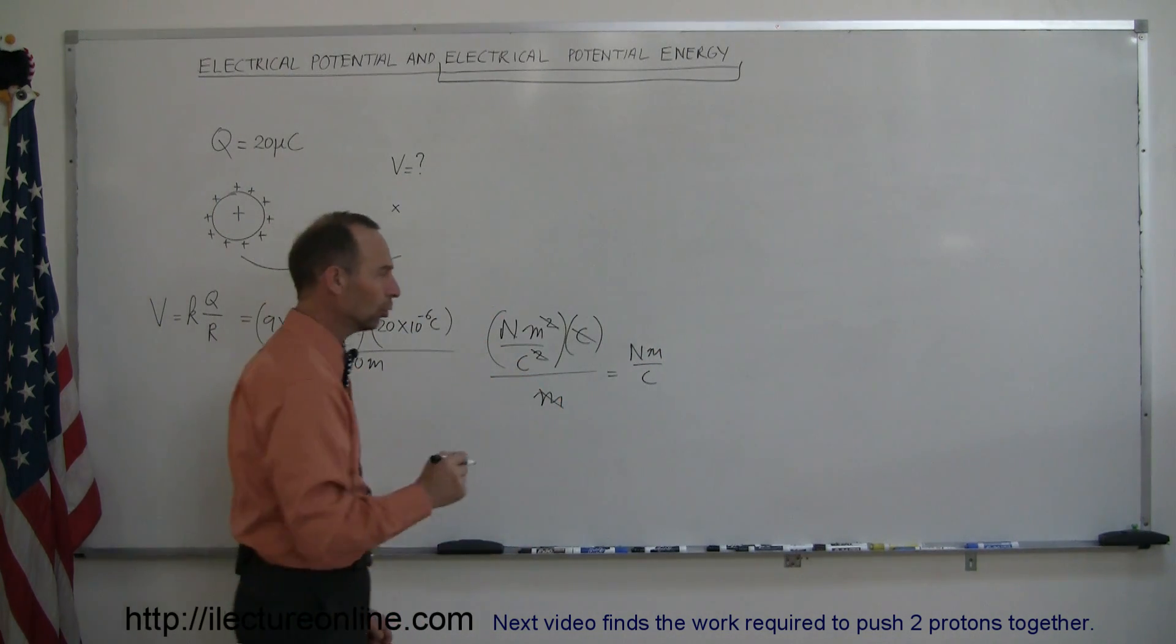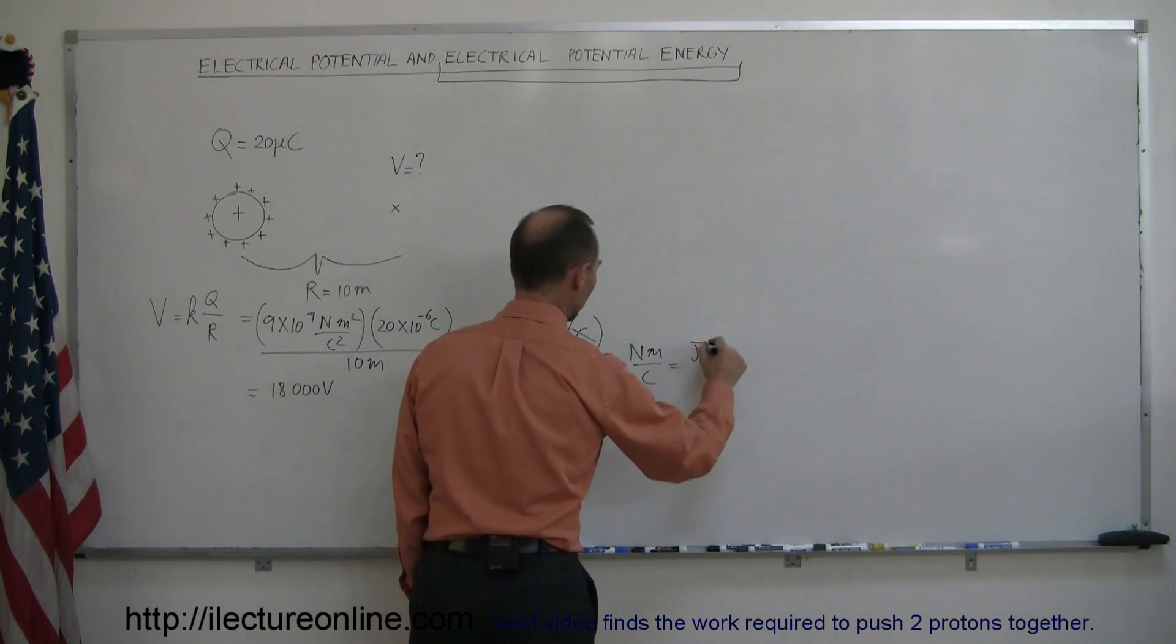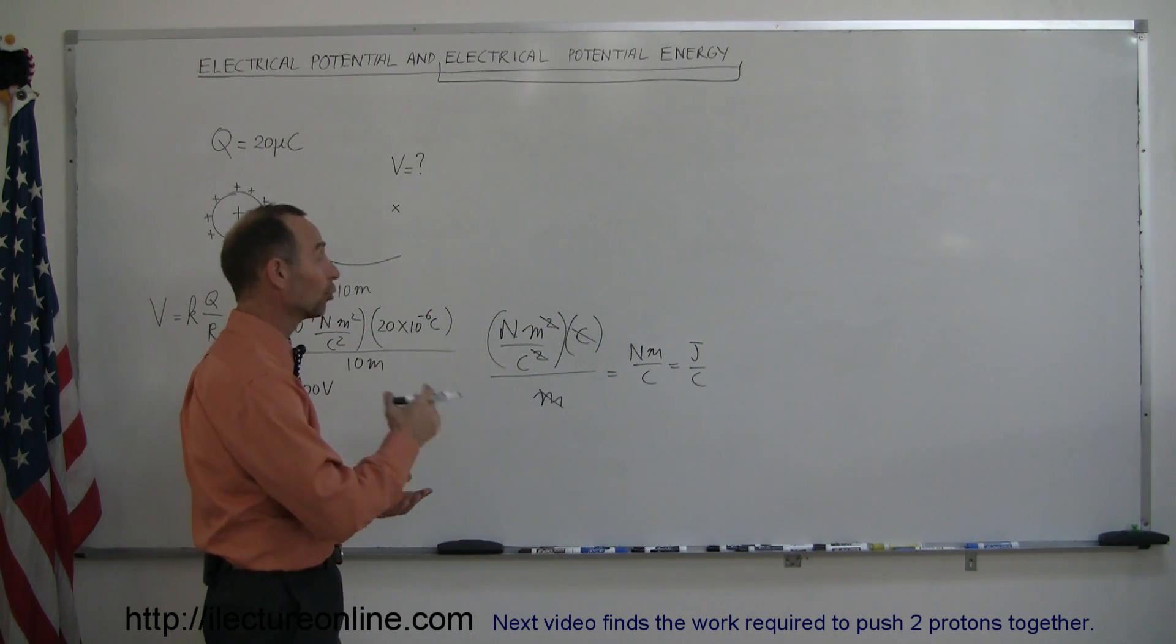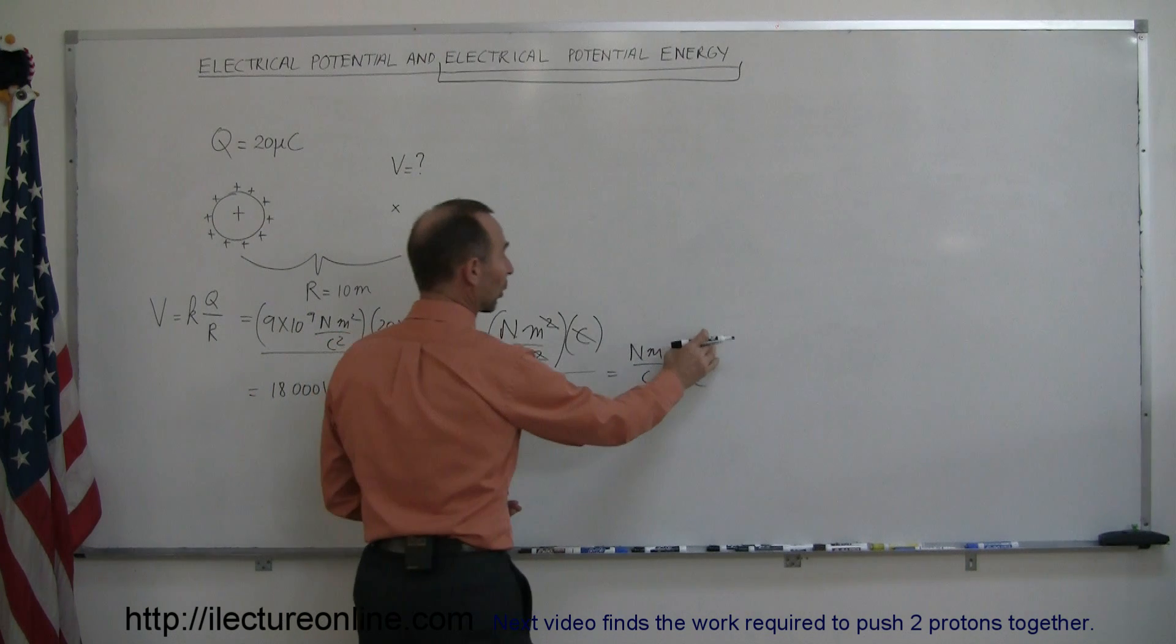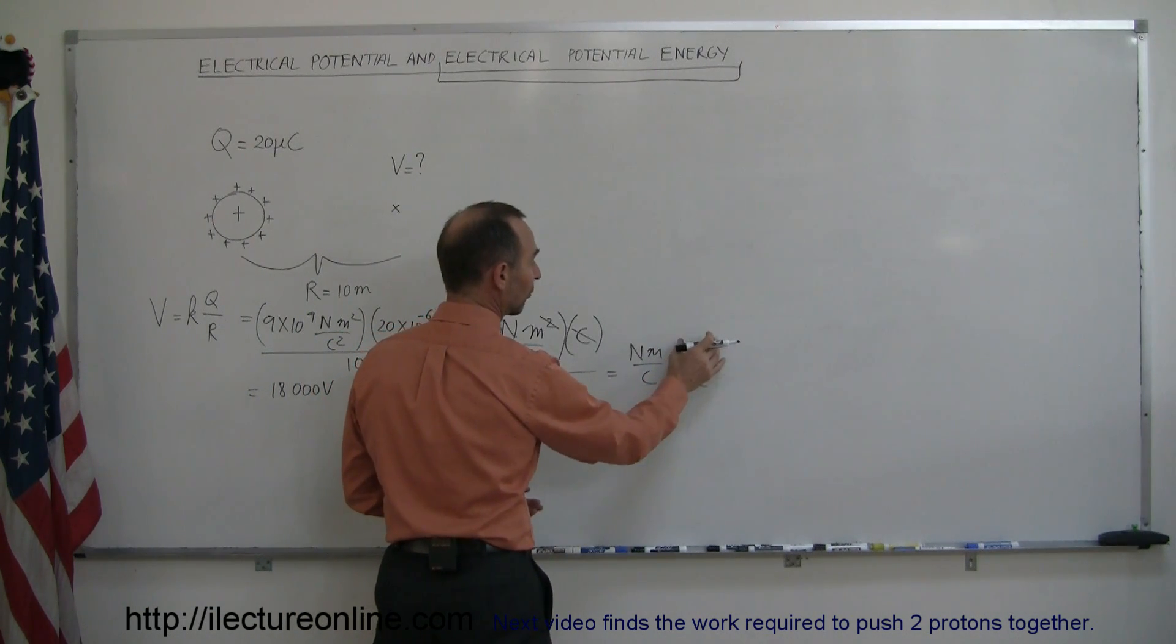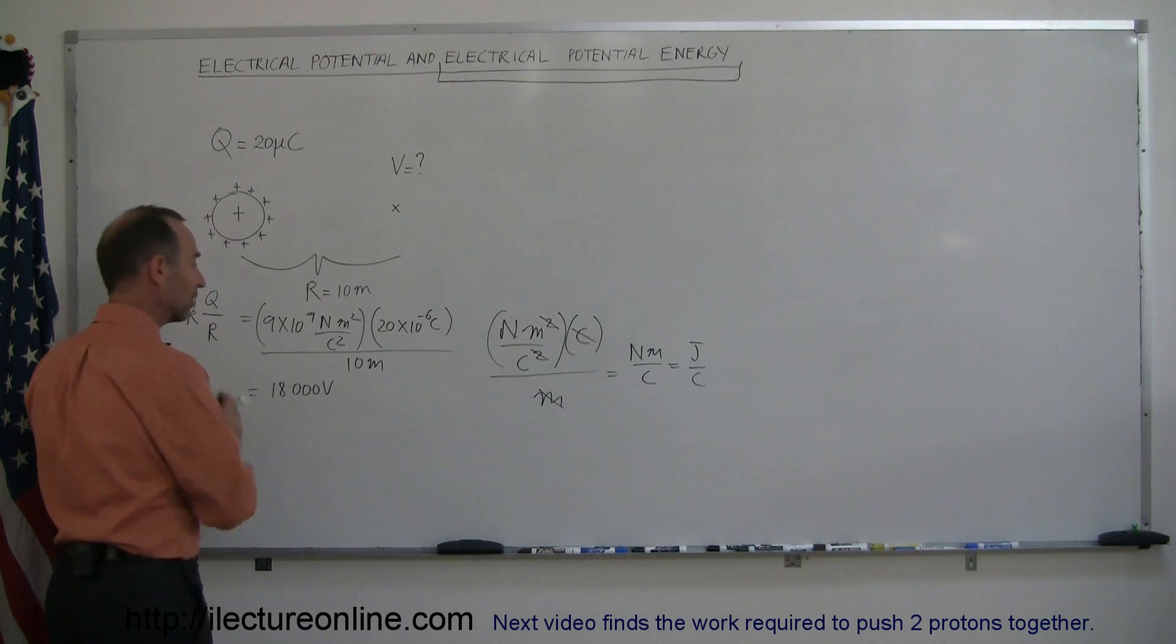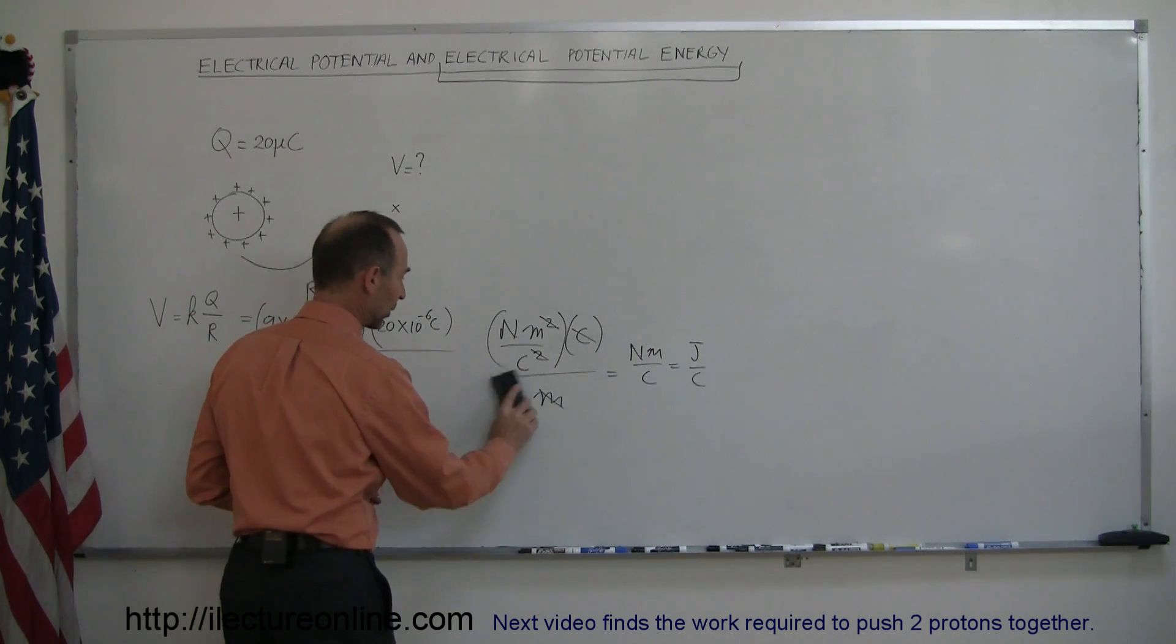A newton meter is a joule, joule per coulomb, and that happens to be the units of volts. Volt is joules per coulomb. It's work done to get a charge through the electric field divided by the size of the charge, so by definition that's indeed volts, so the units seem to work out.